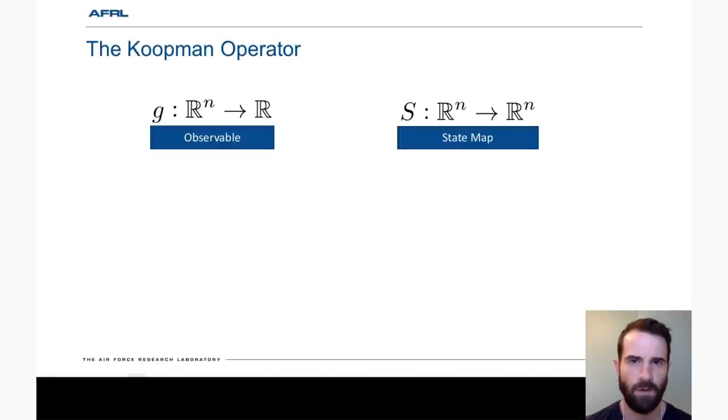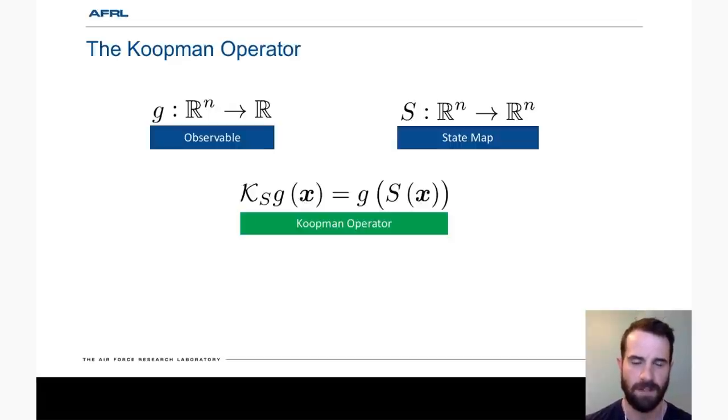To give you a brief overview of the Koopman operator, consider some scalar valued function or observable g that maps the system's state into a scalar value. Then consider some state map s that describes the evolution of the system. This could be from a discrete system or a discrete form of a continuous or hybrid system. We're then interested in the evolution of the observable as the system evolves.